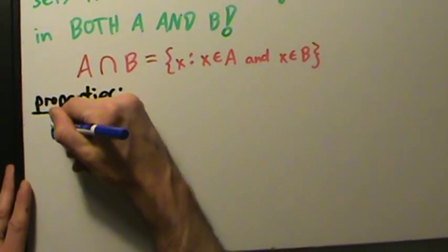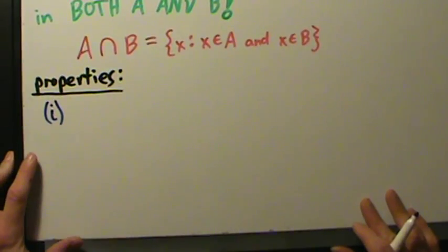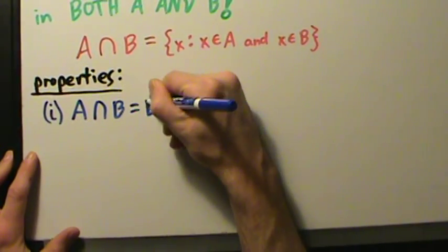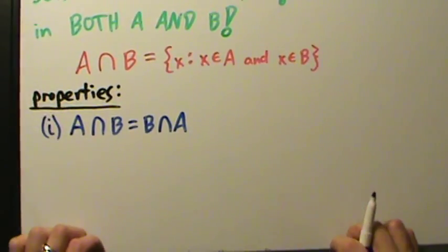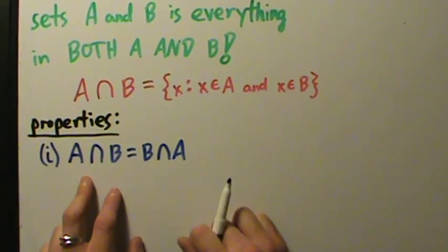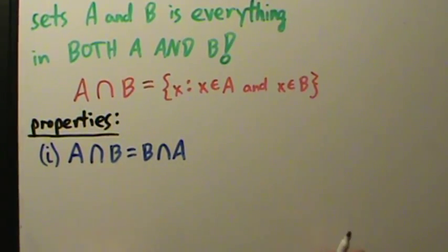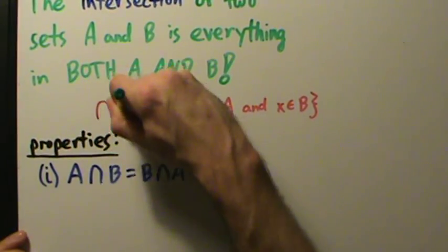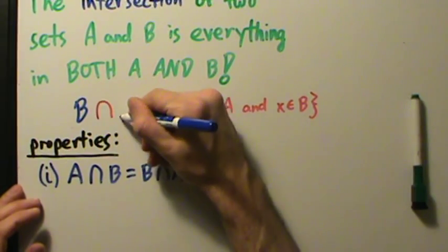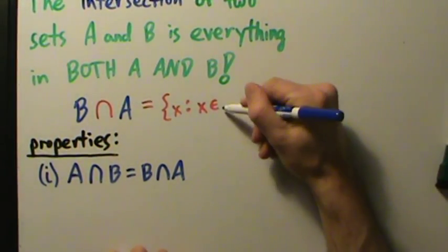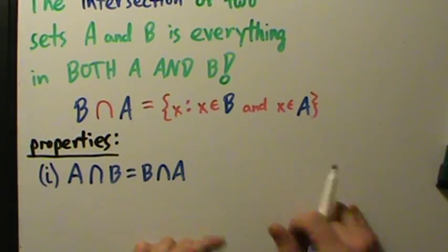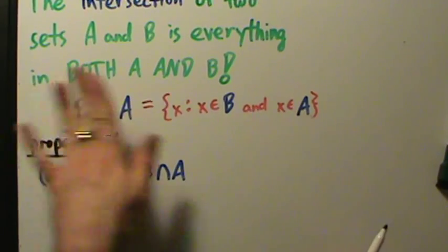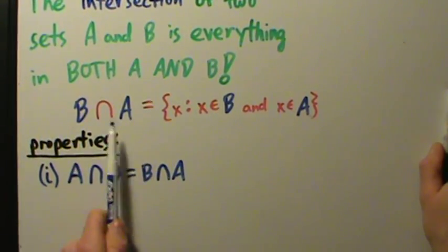Property 1 says, similar to unions, A intersect B is the same thing as B intersect A. In other words, if you want to intersect two sets, it doesn't matter what order you look at them in. Why might that be true? A intersected with B is all X such that X is in A and X is in B. If we switch the roles of A and B, we get X is in B and X is in A — that's the exact same thing. So this really is the same as A intersect B.